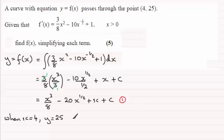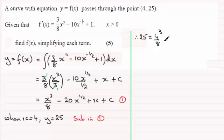And so what I can do is sub these values into equation 1 here. And if we just border that off, then what we've got is that in place of y, we've got 25. So therefore, 25 equals x cubed, that's going to be 4 cubed, divided by 8, minus 20 times x to the power 1/2. So that's 4 to the power 1/2, or basically the square root of 4. And then we've got plus x, that's plus 4, and then plus c.